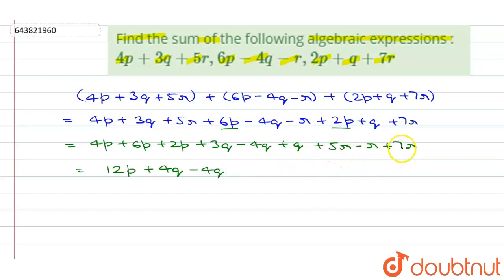And 5 plus 7, 5r plus 7r gives us 12r minus r. So here 4q minus 4q, same coefficient, so it will get cancelled out. And we will get here 12p plus, plus minus minus, so it will get plus 11r.